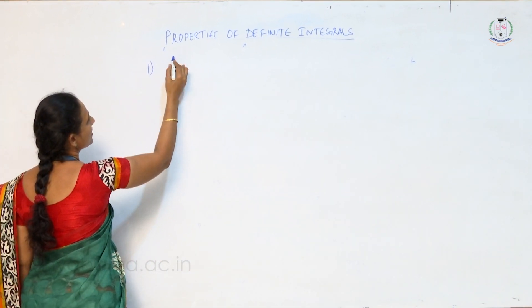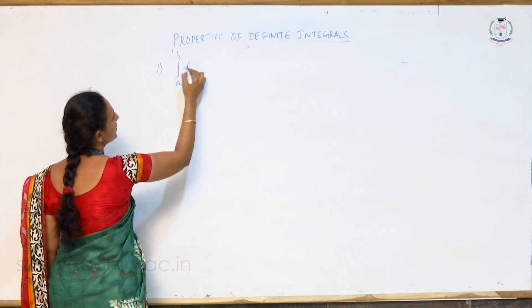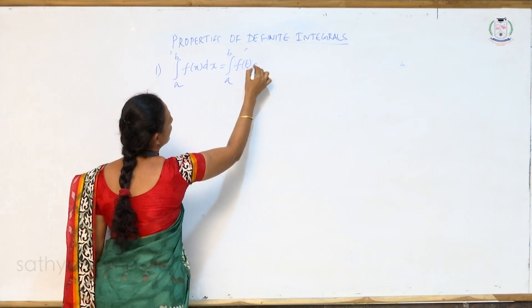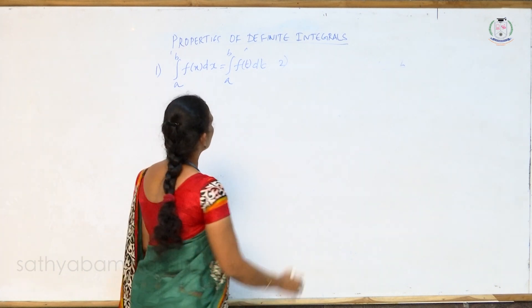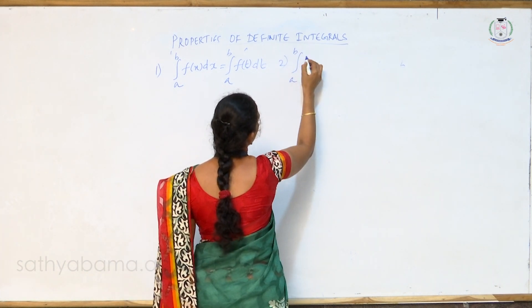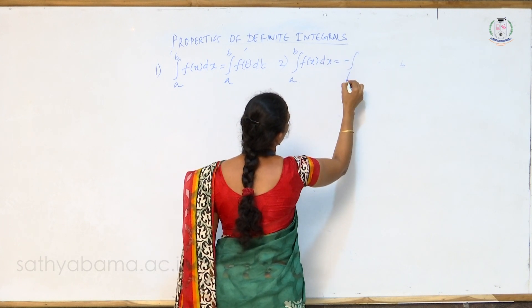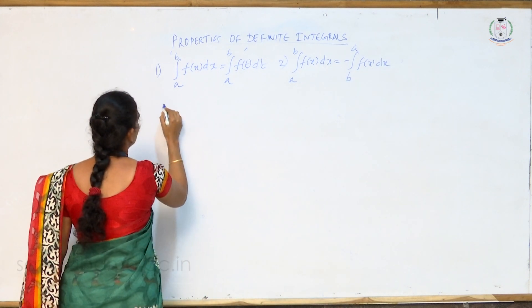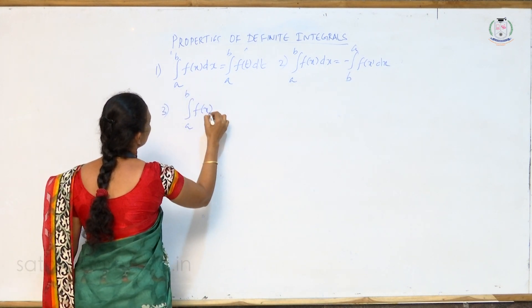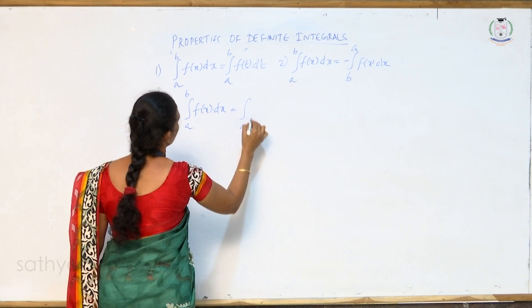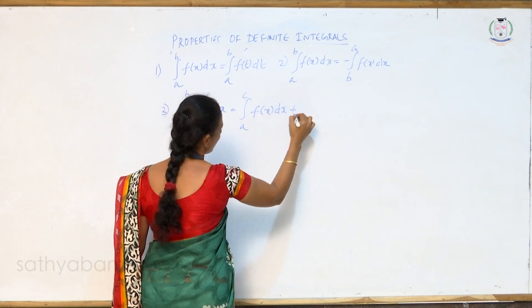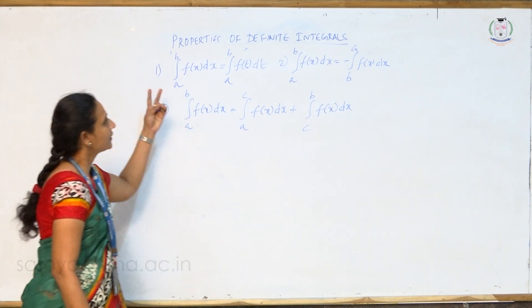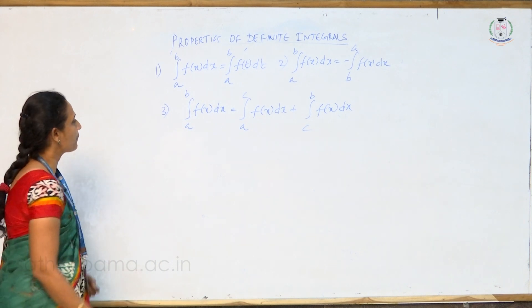So far we have seen three properties: the first is integral A to B f(x) dx equals integral A to B f(t) dt; the second is integral A to B f(x) dx equals minus integral B to A f(x) dx; and the third is the interval-splitting property, integral A to B f(x) dx equals integral A to C f(x) dx plus integral C to B f(x) dx.